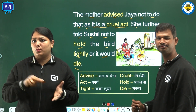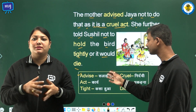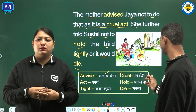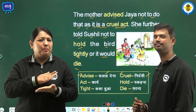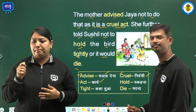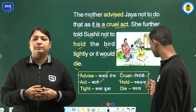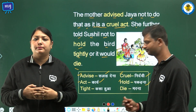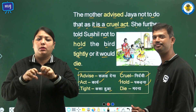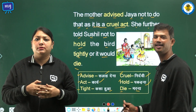Let us see the word meanings. Advice means Salah Dena. Cruel means Nirdai. Act means Karya. Hold means Pakarna. Tight means Kasa Hua. Die means Marna.